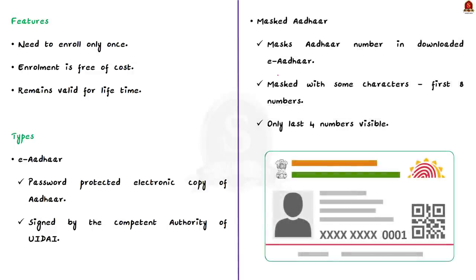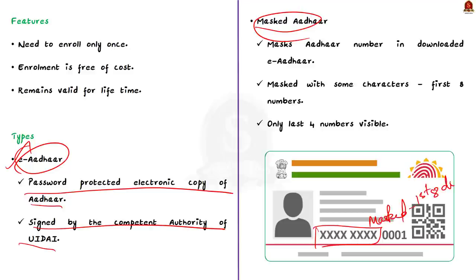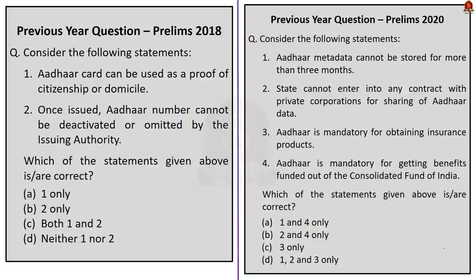Apart from the physical copy, there are two other forms of Aadhaar. The e-Aadhaar is a password-protected electronic copy digitally signed by the competent authority of UIDAI. The masked Aadhaar allows you to mask your Aadhaar number in your downloaded e-Aadhaar — the first eight digits are replaced with characters like 'xxx' and only the last four digits are visible. There is a previous question on Aadhaar which will be discussed in the practice session.